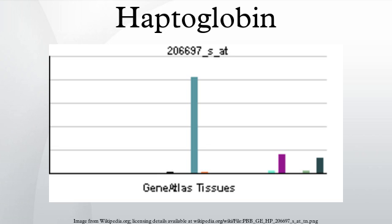Haptoglobin, in its simplest form, consists of two alpha and two beta chains, connected by disulfide bridges. The chains originate from a common precursor protein, which is proteolytically cleaved during protein synthesis. Hp exists in two allelic forms in the human population, so-called Hp1 and Hp2, the latter having arisen due to the partial duplication of the Hp1 gene.